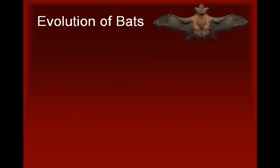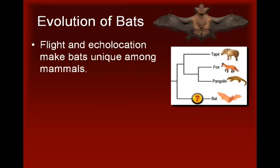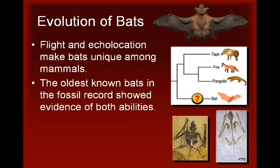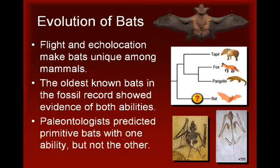The next example involves the evolution of bats. Bats are unique among mammals because of their ability to fly and their ability to echolocate. For quite some time, the oldest known bats in the fossil record showed evidence of both of these abilities. Using evolutionary theory, paleontologists predicted that they should find primitive bats with one of these abilities, but not the other.